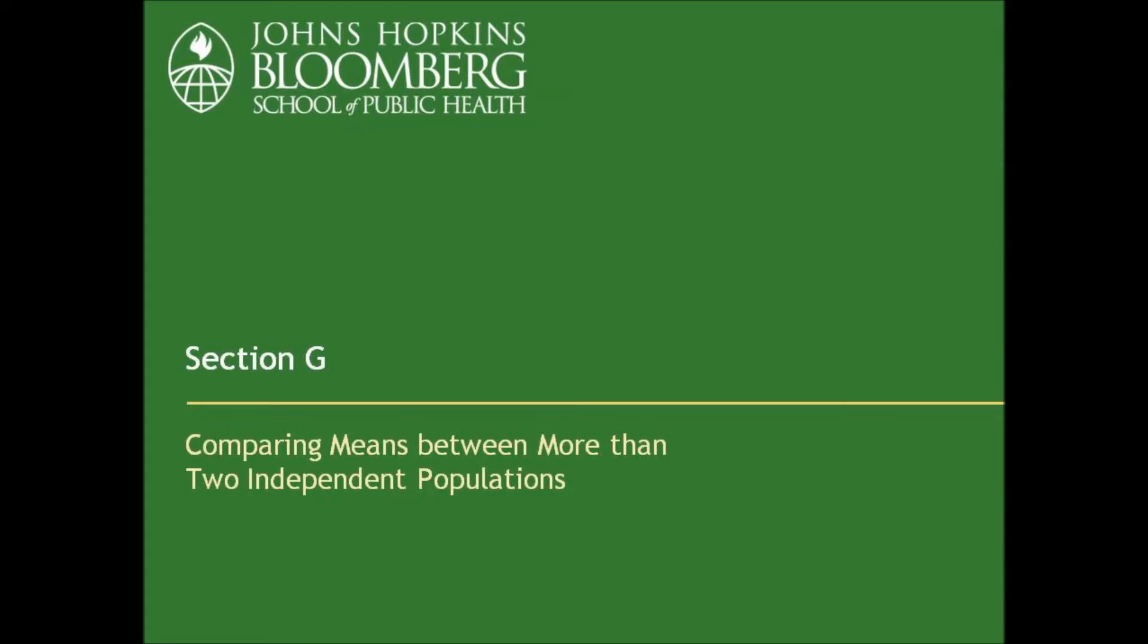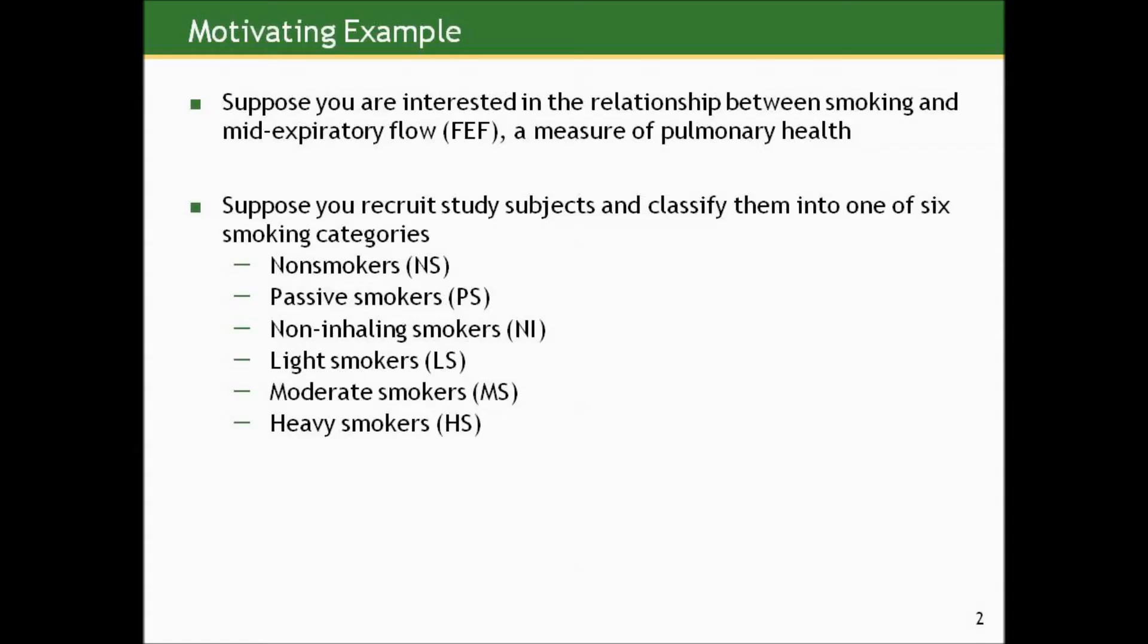In this final section of the lecture five series, we're going to ask what would happen if you wanted to compare means between more than two independent populations?